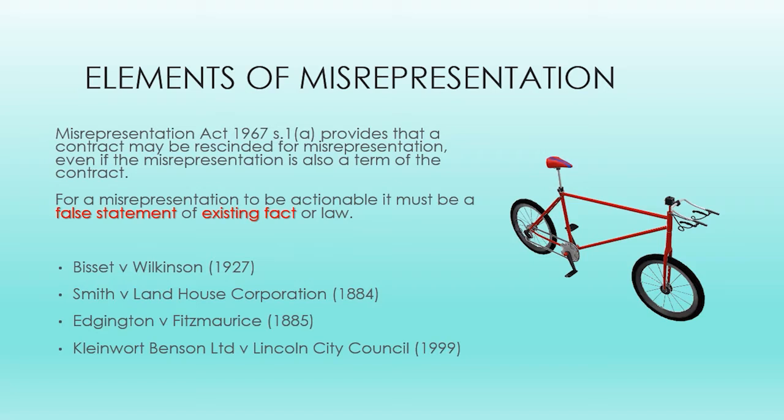See Section 2 of the Act. Section 1(a) provides that a contract may be rescinded for misrepresentation even if the misrepresentation is also a term of the contract. For a misrepresentation to be actionable, it must be a false statement of existing fact or law. A statement of opinion is not generally a misrepresentation. See Bissett v. Wilkinson from 1927.